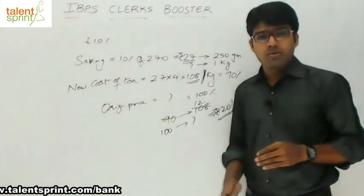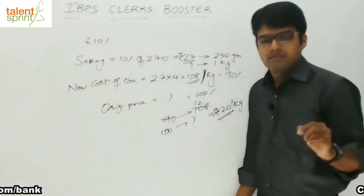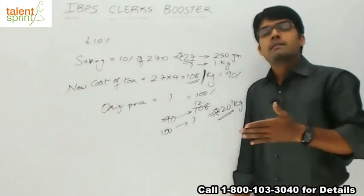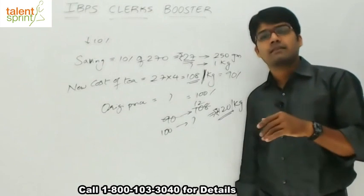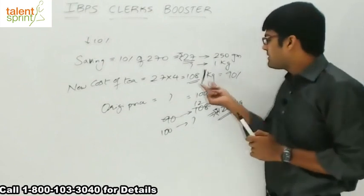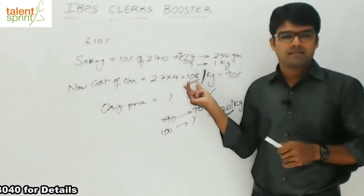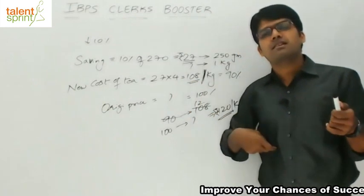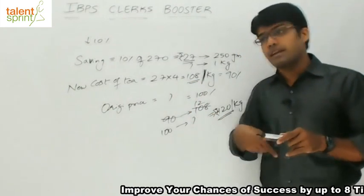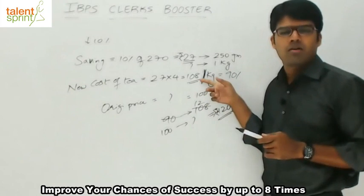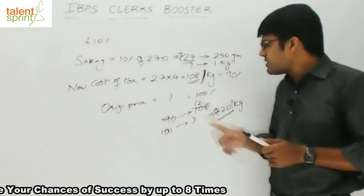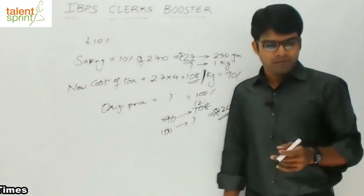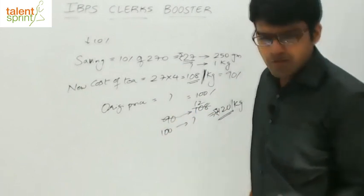You can also verify from the answer options. The price is reduced by 10%. Option 1 is 130: 130 minus 13 equals 117, but we have 108, so 130 is not the answer. Option 2 is 120: 120 minus 12 equals 108. Yes — that matches. So 120 is the correct answer: 120 rupees per kg.